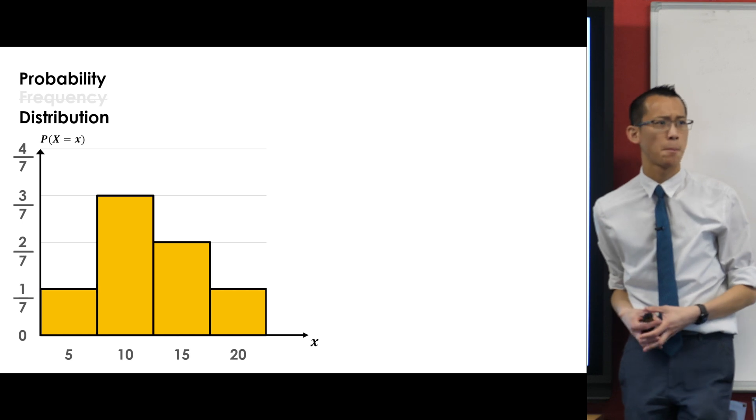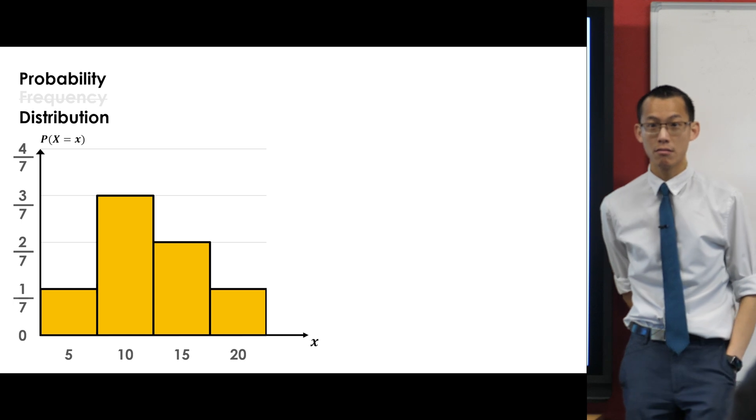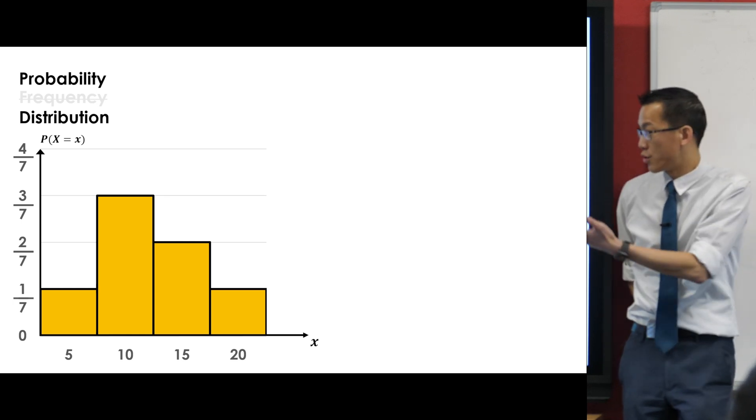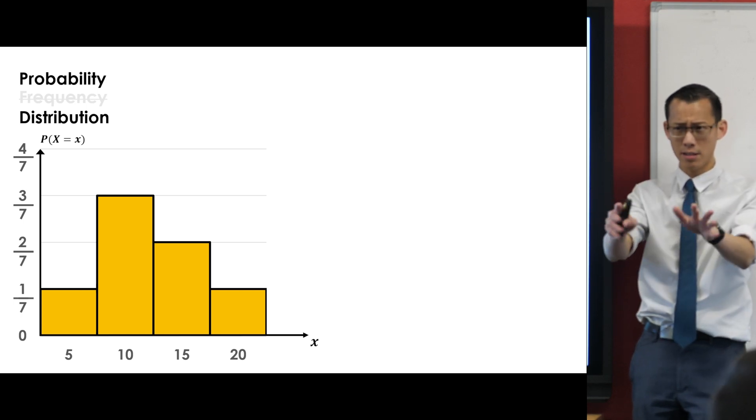Okay why are they all out of seven? Because that's how many there were before but it's worth pointing out like could have been 70 or 700 and I would just have more in each group. So this is just our relative frequency. Does that make sense? Okay excellent.